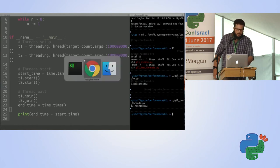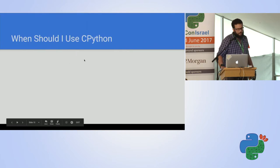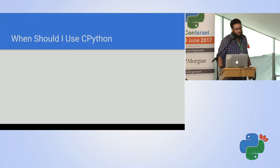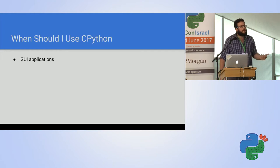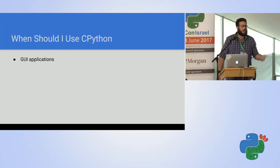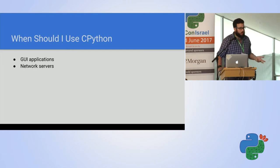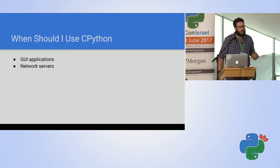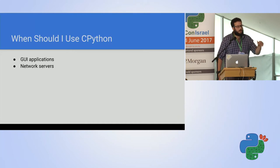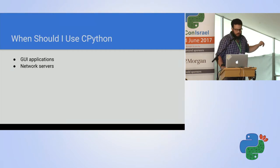When should you use CPython threads? Some would say GUI applications, where the main thread waits for a user event, and every time a user event occurs the background opens a thread to execute what the user wanted. Another case is network servers: instead of waiting for a user event, you wait for a request or IO, then do a thread to calculate the response and push it back to the client.